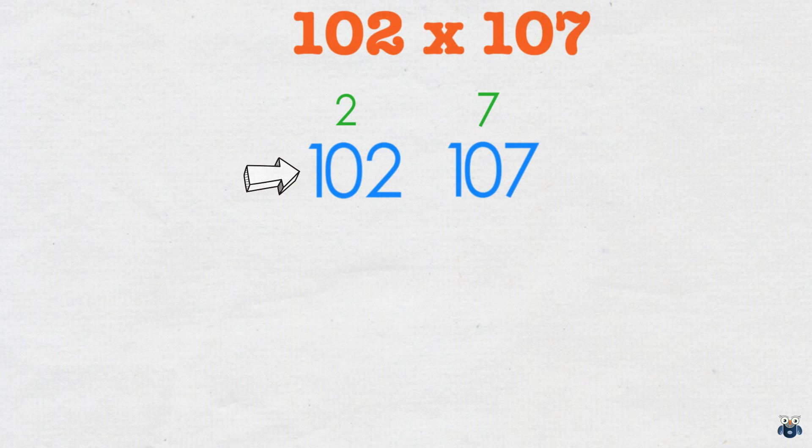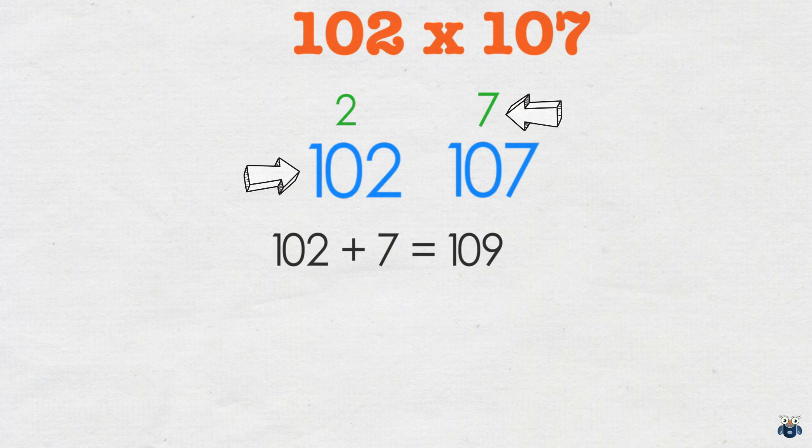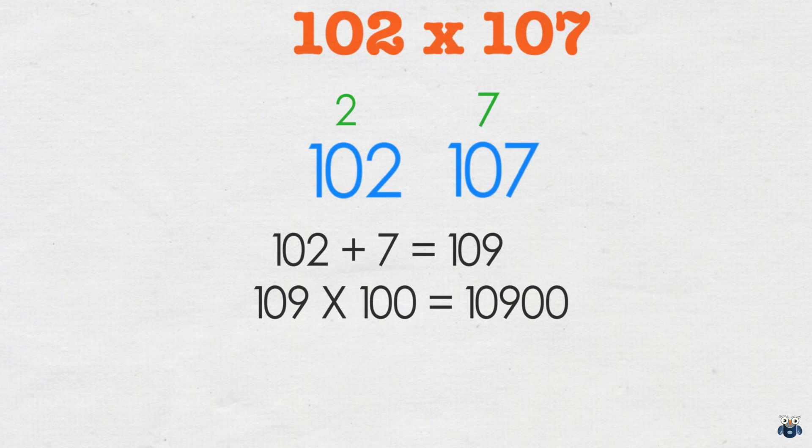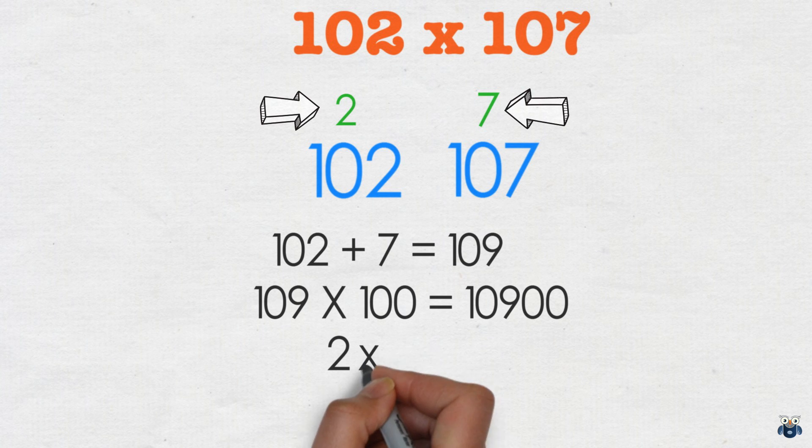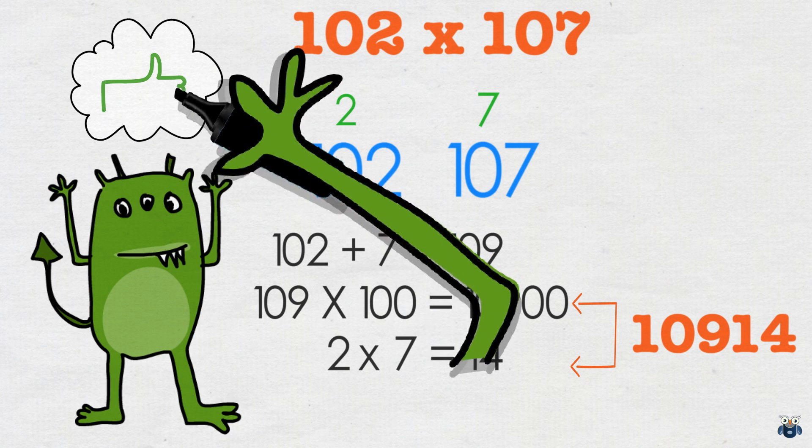Now we add the first number and the second deficit. 102 plus 7 is 109. And multiplying this result with our base we get 10900. We then multiply the deficits. 2 times 7 is 14. And finally we add 10900 and 14 which gives us 10914 our final answer.